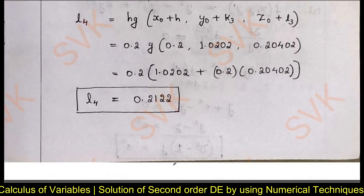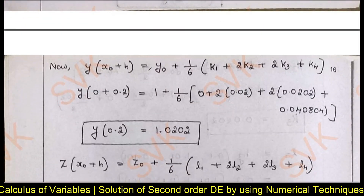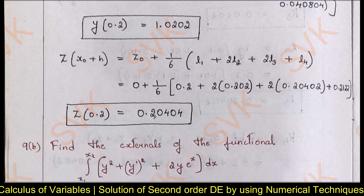Substituting all values into the standard formula y(x₀ + h) = y₀ + (1/6)(k₁ + 2k₂ + 2k₃ + k₄), we get y(0.2) = 1.0202. Similarly, z(0.2) = 0.20404. This is the way of solving RK method problems.